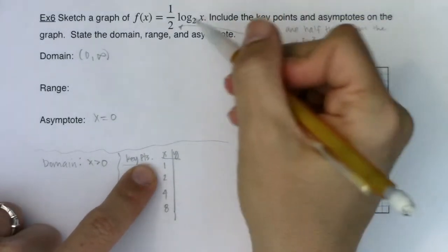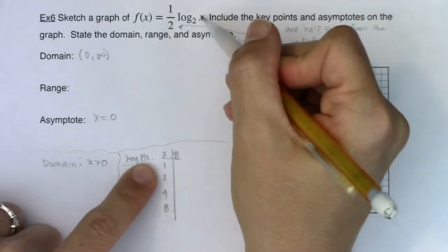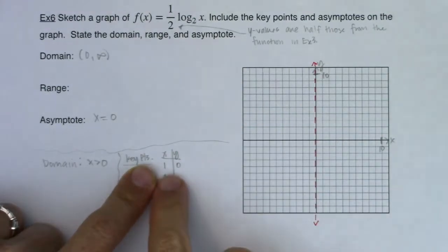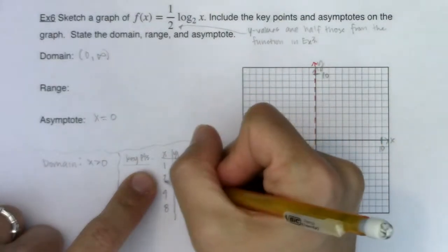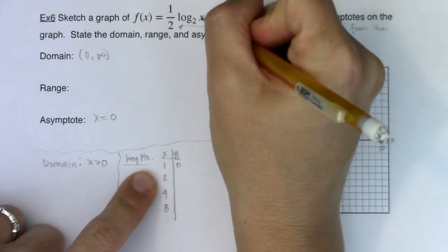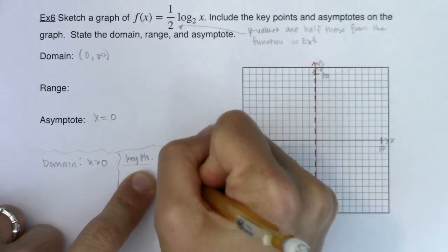If I plug 1 in, log base 2 of 1 is 0. 0 times a half is 0. Just taking note, I found an x intercept. If x is 2, log base 2 of 2 is 1. 1 times a half is 1 half.